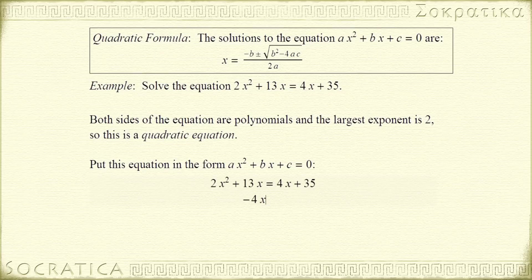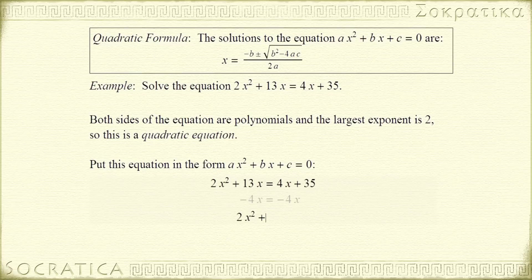Let's first get rid of the 4x term on the right-hand side. To do this, we'll subtract 4x from both sides. Remember, if you do something to one side of the equation, you have to do the exact same thing to the other side, otherwise the two sides are no longer equal to one another. On the left-hand side, we can combine 13x minus 4x, which gives us 9x. On the right-hand side, 4x minus 4x cancels, leaving us with just 35 on the right-hand side.